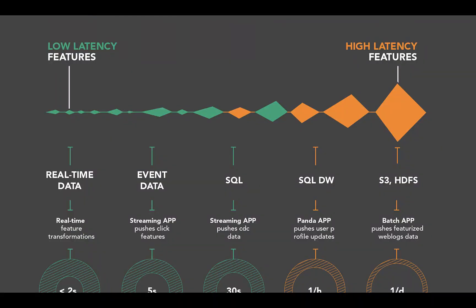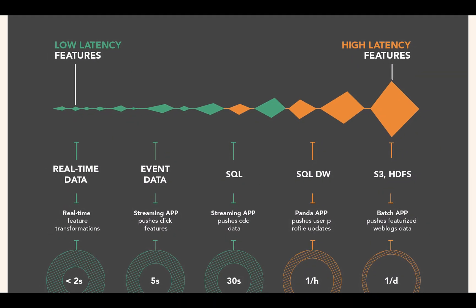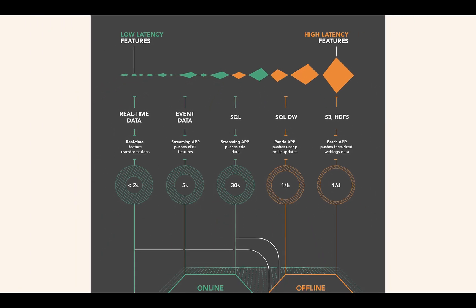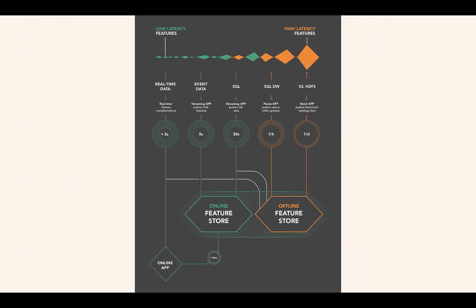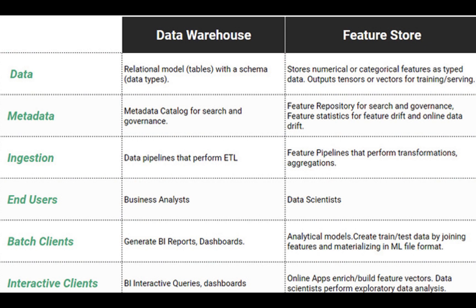Jim Dowling of Logical Clocks notes that a feature store is typically two databases: an offline feature store for serving large batches of features to create datasets and batch application scoring models, and an online feature store for serving a single row of features for an online model.